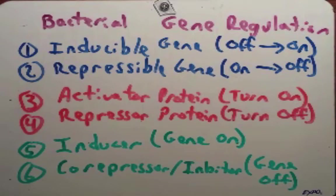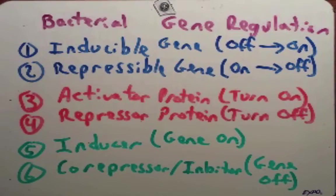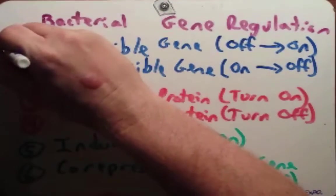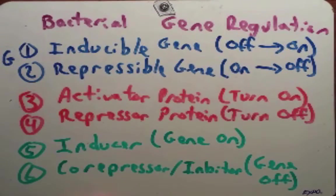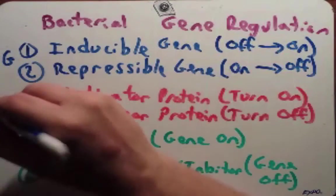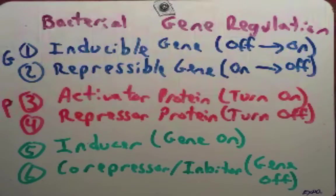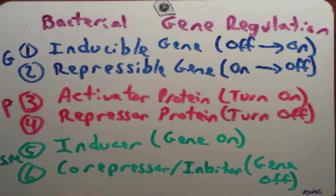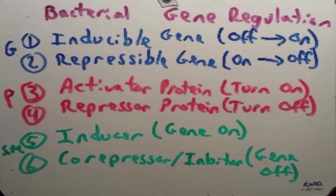Let me briefly review what we just said, because these six factors are very important in understanding how genes are regulated in bacteria. The activator and repressor proteins play a direct role in turning a gene on or off. The inducers and co-repressors or inhibitors are signaling molecules that bind to those proteins. Now let's walk through some examples.